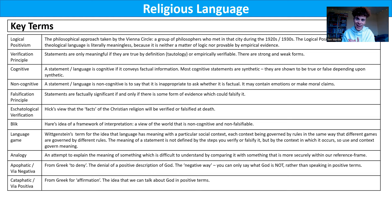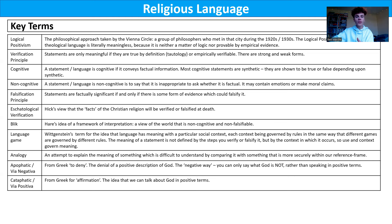Eschatological verification is Hick's view that the facts or truth claims made by the Christian religion will be verified or falsified at death or after death. He says that verification doesn't just need to take place in this world — it could actually take place in the next world, in the next life. That's his way of defending the meaningfulness of religious statements, and he uses his parable of the travellers going to the celestial city in order to explain that.